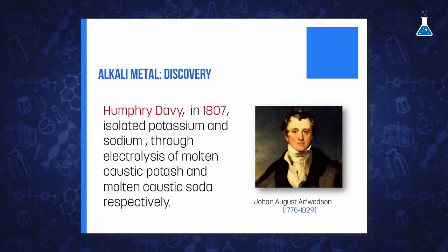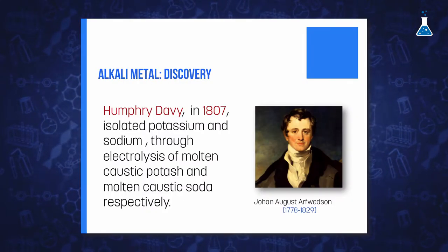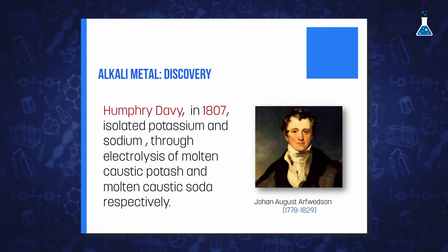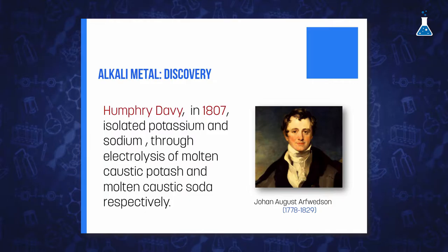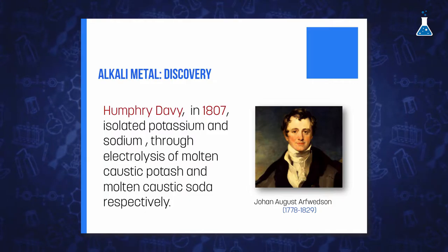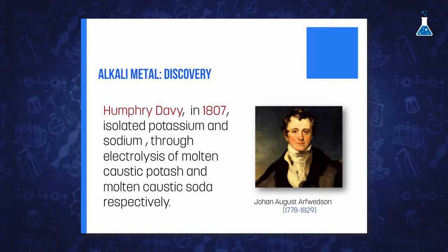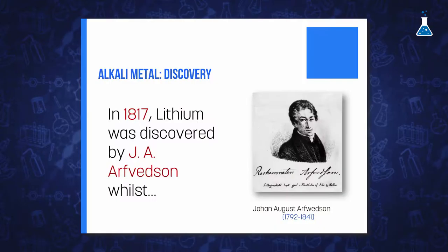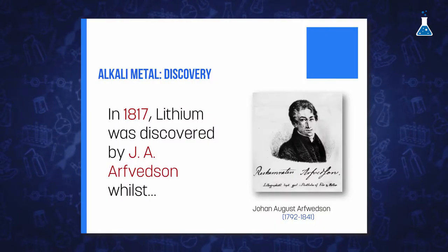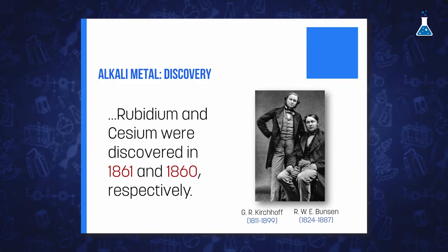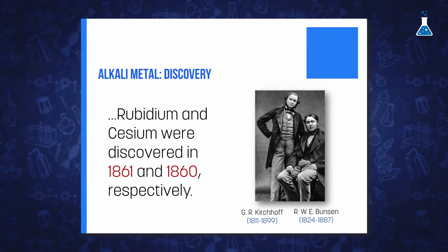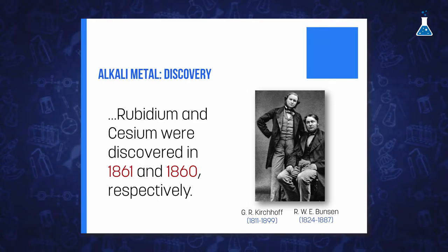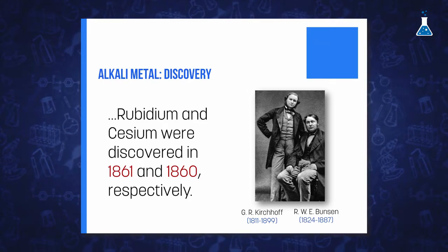However, the discovery of the uncombined elements was not possible until comparatively recently. It was at the beginning of the 19th century in 1807 when the British scientist Humphry Davy was able to isolate metallic potassium first and then sodium through an electrolysis process of molten caustic potash and molten caustic soda. It was in 1817 when lithium was discovered by J.A. Arfvedson, while the two next elements of the group, rubidium and cesium, were discovered in 1861 and 1860 respectively.